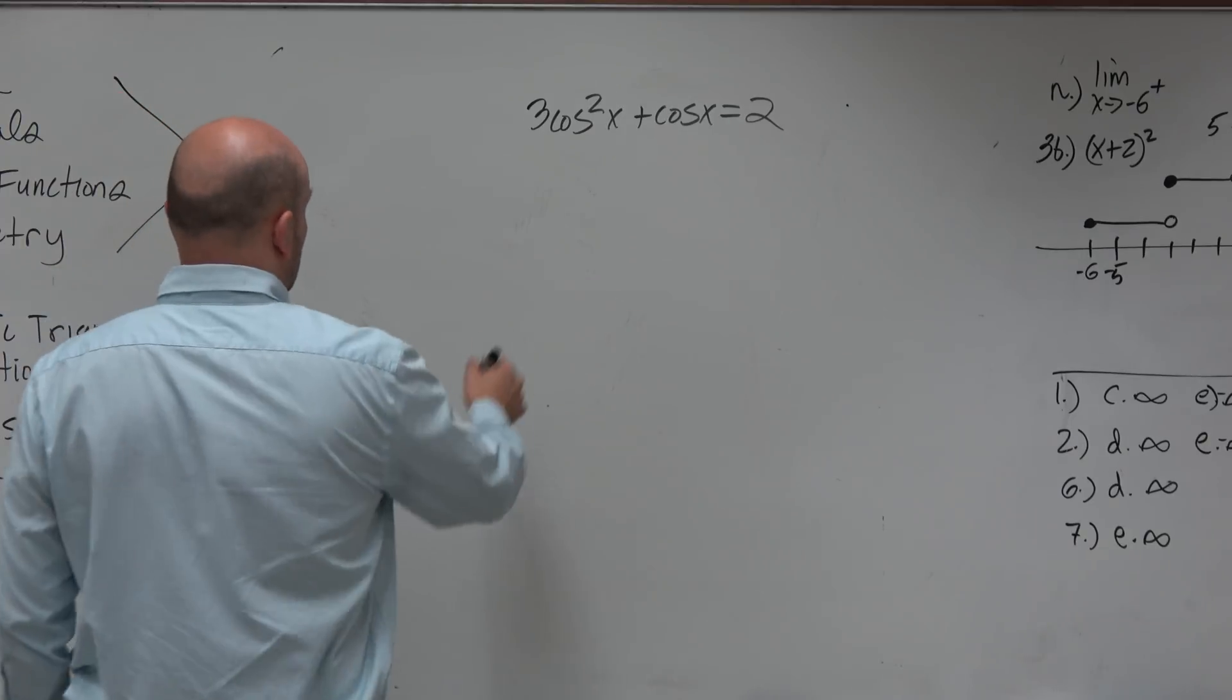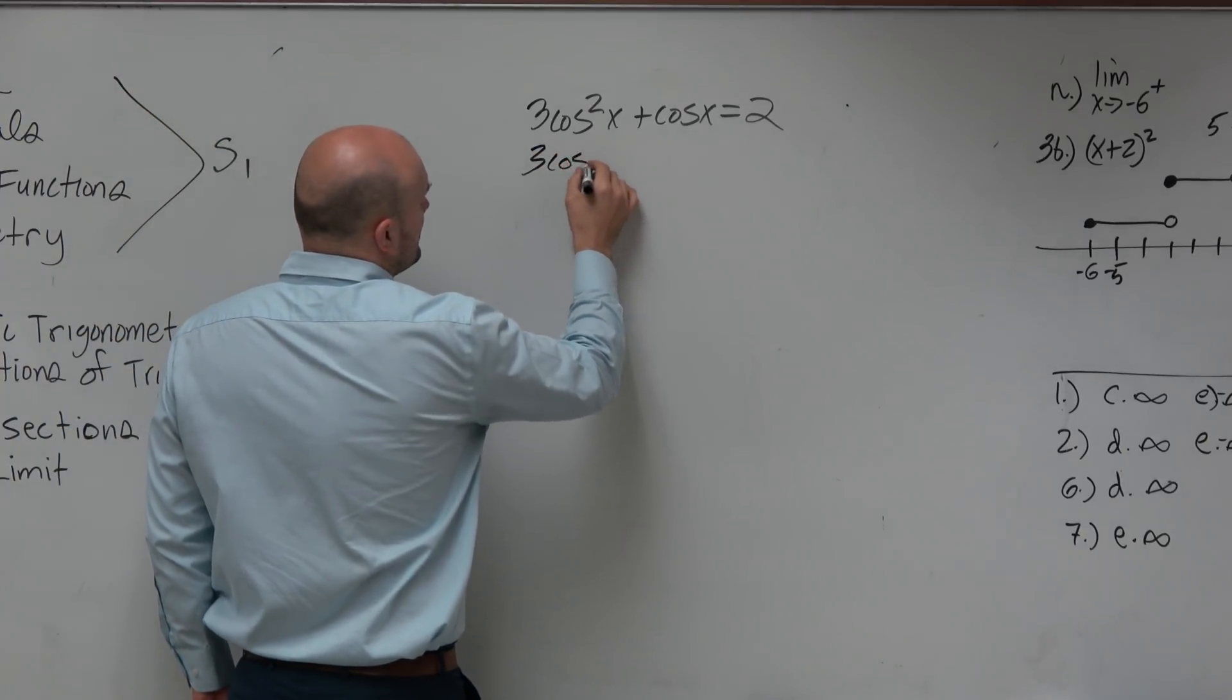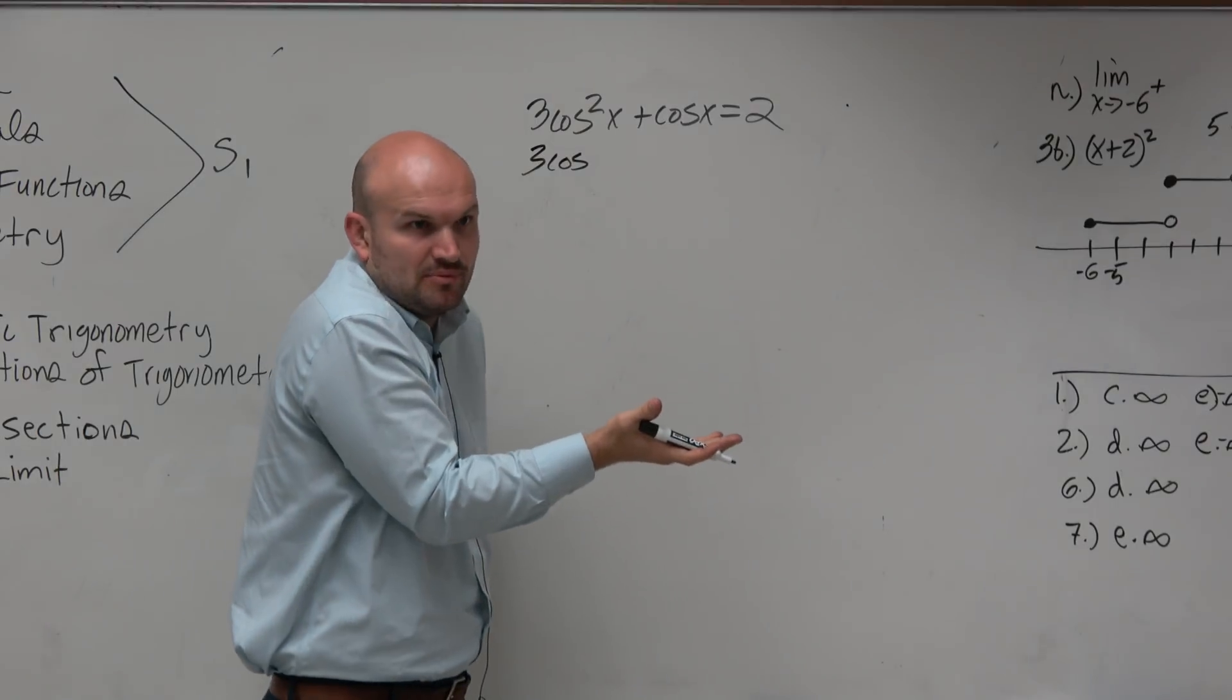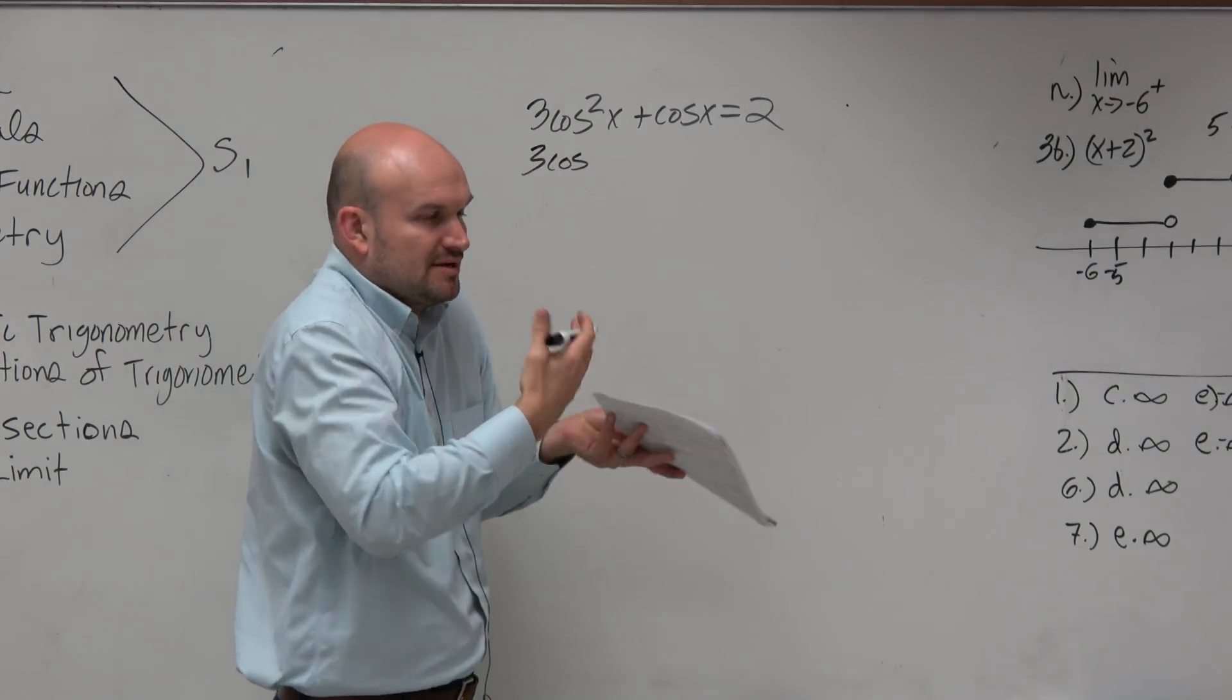So the first thing, guys, if we want to solve, we can't isolate a cosine, right? There's multiple of them and we can't combine them together because one's squared and one's not.